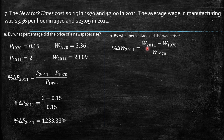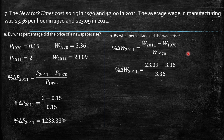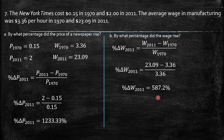By what percentage did the wage rise? Again, we compute (final value minus initial value) over initial value times 100 to get the percentage. Replacing the values already provided by the exercise: ($23.09 − $3.36) / $3.36 × 100 = 587.2% increase in wages comparing 2011 to 1970.